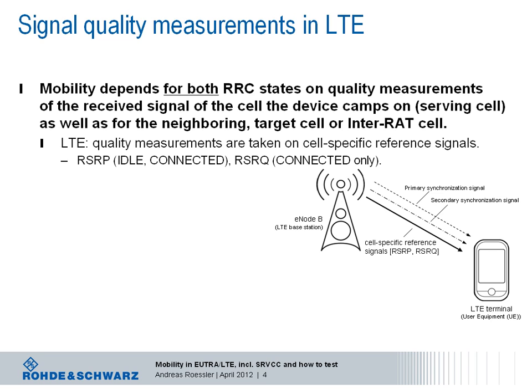These quality measures are carried out on the cell-specific reference signals embedded over the entire system bandwidth in LTE. In the frequency domain they occupy every sixth subcarrier, meaning twice per resource block. The initialization of the sequence used for the reference signals is based on the cell's identity and therefore cell-specific. The cell's identity is detected by the terminal while reading the primary and secondary synchronization signal.